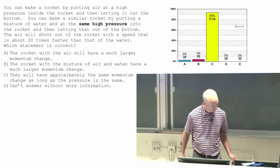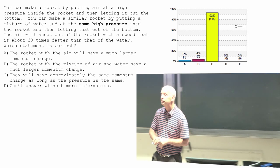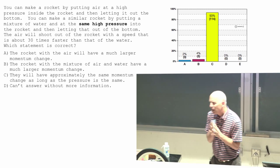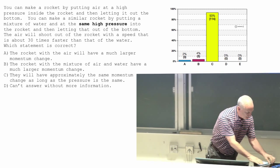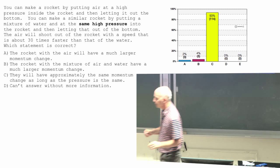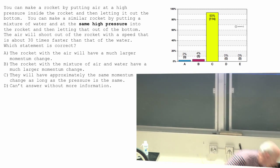Any questions about that one? Yeah. Why do we think about the mass of the water and the air instead of the mass of the rocket itself? Because the mass of the rocket is the same in either case. So the momentum change of the rocket is going to be opposite to the momentum change of the...